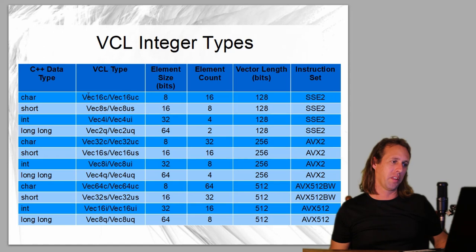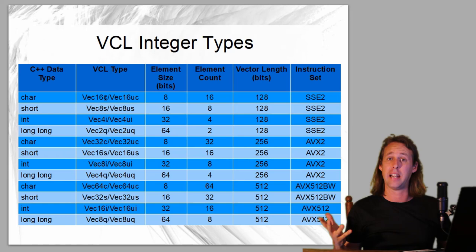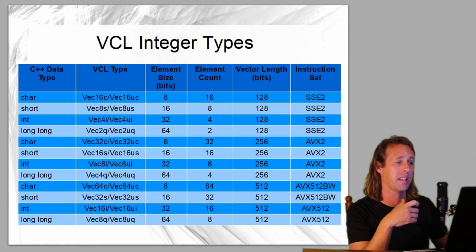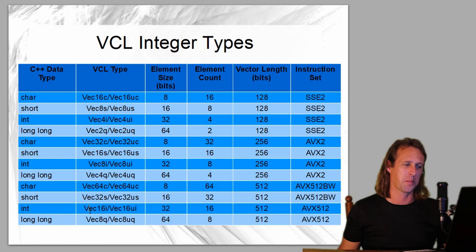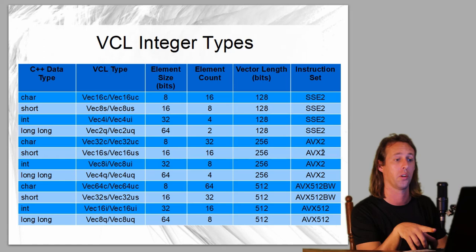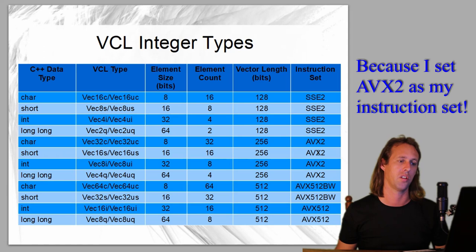A quick rundown on the data types in the VCL. Vec16c is a vector of 16 characters. Vec8us gives you 8 unsigned short integers - the U means unsigned. Vec16i would be a vector of 16 integers, and so on. Where your hardware doesn't have the capable instruction set - say it doesn't have AVX512 - VCL will use AVX2 instructions whenever you code 512-bit vectors, using a couple of AVX2 instructions to emulate AVX512.